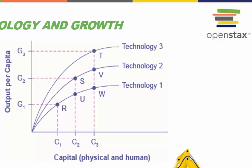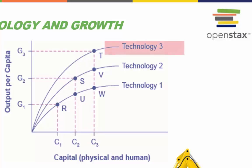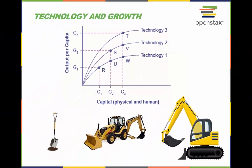However, imagine that capital deepening is combined with improvements in technology. As capital deepens from C1 to C2, technology improves from the Technology 1 line to the Technology 2 line, and the economy moves from R to S. Similarly, as capital deepens from C2 to C3, technology increases from Technology 2 to Technology 3, and the economy moves from S to T. With improvements in technology, there is no longer any reason that economic growth must necessarily slow down — hence the impact of the law of diminishing returns can be avoided through the use of technology in the form of invention and innovation.